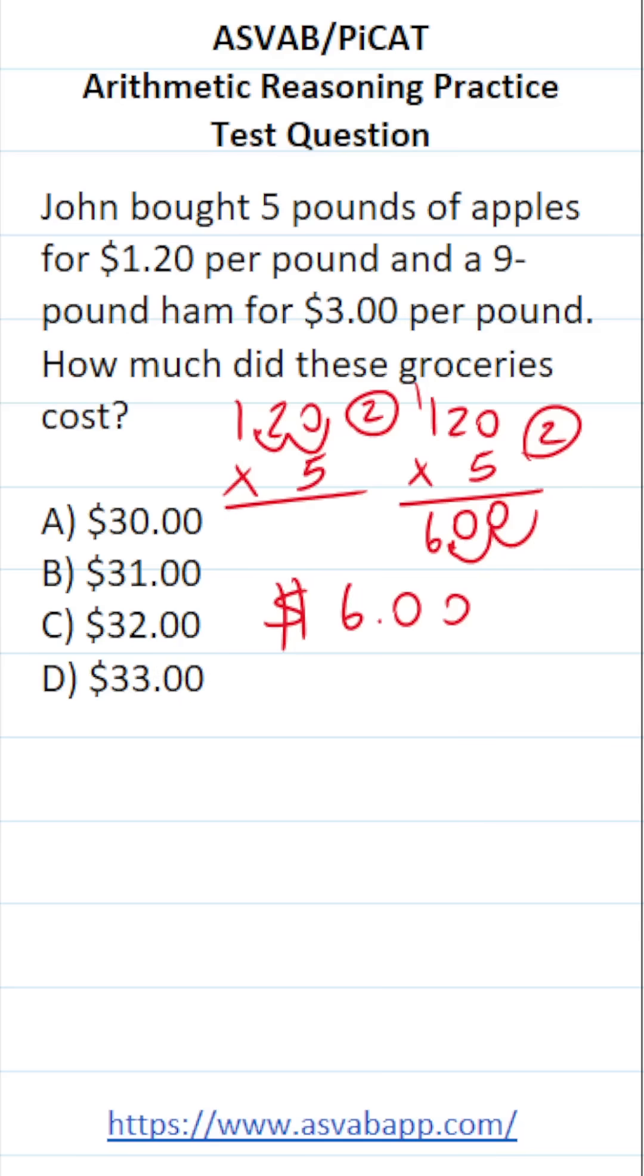Now let's determine how much the ham cost. The ham was $3 per pound and it was a nine-pound ham. So we're going to do three times nine. We have to take the decimal in three and move it two times to the right to make this 300 times nine, with two decimals to move back to the left.